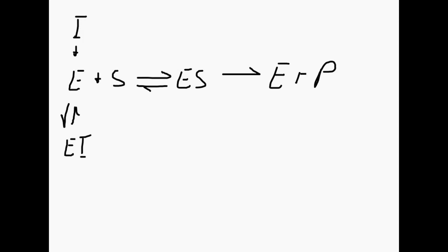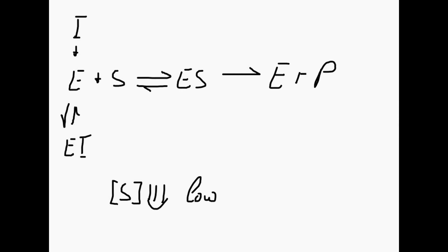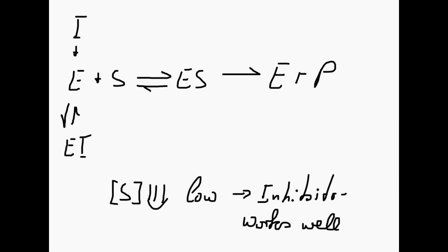Now let's figure out under which conditions this inhibitor is very effective. For the inhibitor to be effective, we would want a lot of the enzyme in the free enzyme state. If the enzyme is in the free state the inhibitor can bind; if the enzyme is in the ES state the inhibitor cannot bind. So for a lot of free enzyme to be around, the substrate concentration must be fairly low.